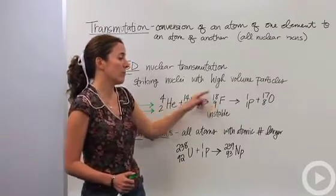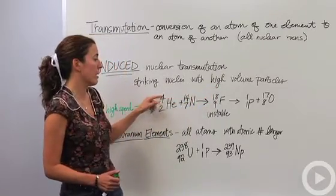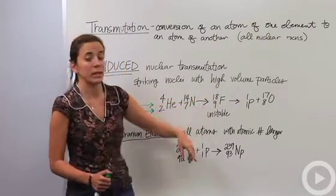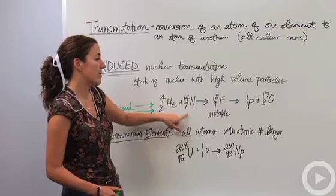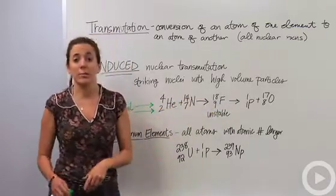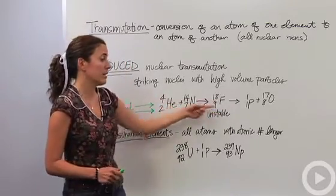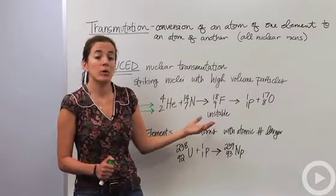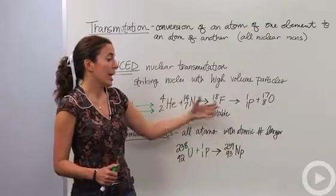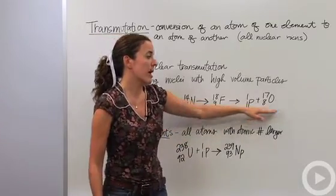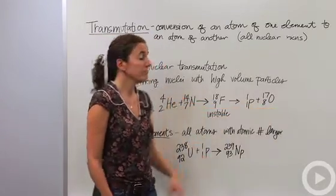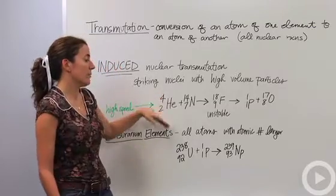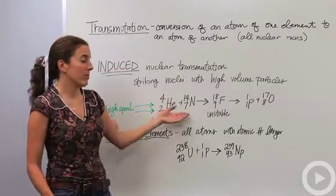And you're going to end up with an unstable fluorine atom. So notice the four plus fourteen mass number equals eighteen, and the two plus seven atomic number equals nine. So we're going to end up with a new atom. We've mutated this nitrogen into a fluorine, very unstable, and this fluorine is going to break down. It's now going to be a normal radioactive element, and it's going to break down to a proton and an isotope of oxygen. So here is an example of induced transmutation right here.